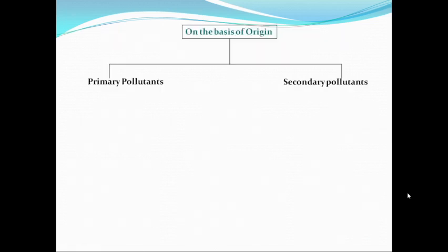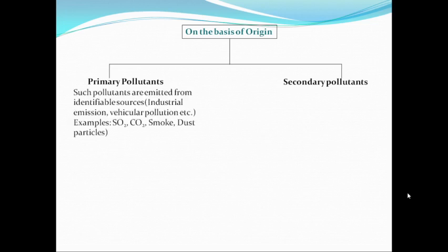Another classification of air pollutants could be again on the basis of origin. On the basis of origin, we can classify these pollutants as primary air pollutants and secondary air pollutants. The primary air pollutants are those air pollutants which are emitted from an identifiable source — a place or a source which can be seen with the naked eye. The example in this category could be emissions from industries, emissions from vehicles, etc., because we can locate that particular chimney through which the pollutants are coming to the environment in an industry.